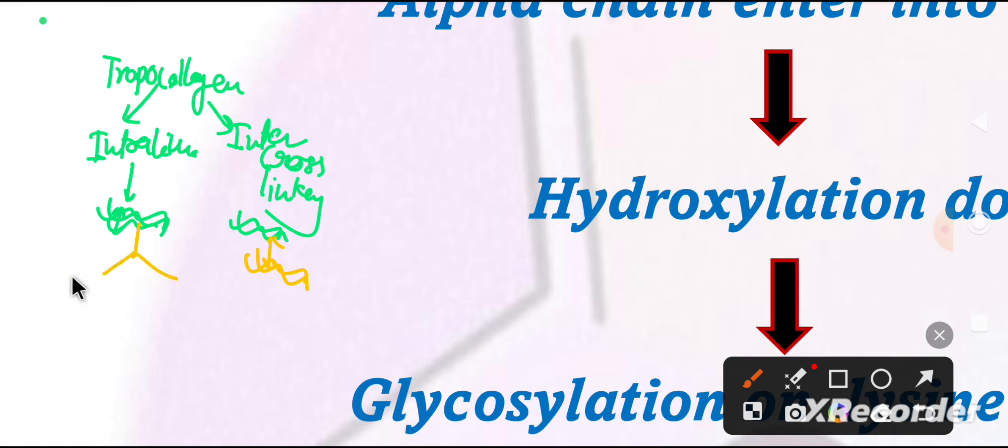The intra-linkage involves lysine residues. Lysine has an amino group in its R-group. This forms hydroxylysine which undergoes aldol condensation. Aldol condensation will cross-link to each other.